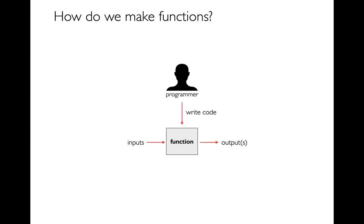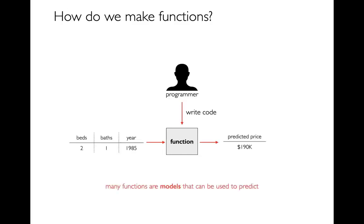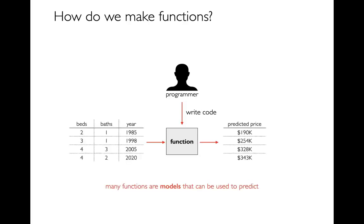All of you have been running functions for a long time. Functions take inputs, maybe in the form of parameters, and then they have some outputs — maybe printing something or returning a value. For example, a function could be doing something like making a prediction. Maybe my input is some details about a house that's for sale, and then I might be predicting what it might sell for. When I have a function like this, that's an example of a model. I could feed in a bunch of values and make a bunch of predictions.